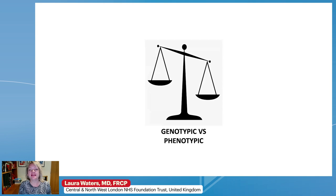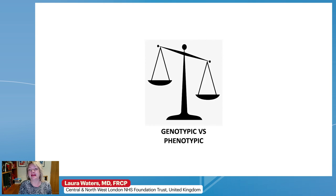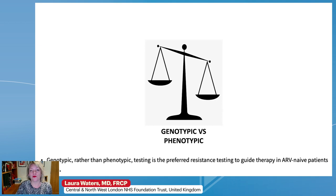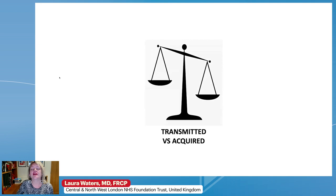Starting with genotypic versus phenotypic: genotypic testing — nucleotide sequencing, looking for nucleotide changes that confer amino acid changes associated with loss of drug susceptibility — is the standard resistance testing, but you need to know what you're looking for. Phenotypic testing, taking actual virus and seeing the impact of mutations on drug susceptibility in vitro, is what helps interpret and shape genotypic algorithms. But the guidelines are clear: for routine clinical practice, genotypic testing is what we do, and that's a line from the DHHS guidelines.